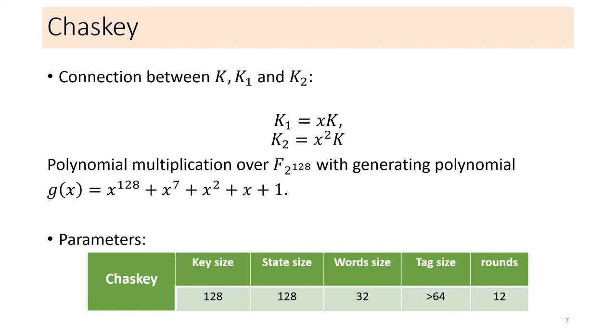The keys K1 and K2 are derived from K by polynomial multiplication with X correspondingly with X square over the finite field F2 to the 128. For K1, this multiplication means that K is shifted with one position to the left if the first bit, which is the leftmost bit, is equal to 0, or shifted and then XOR with a constant if the first bit is 1. For this generating polynomial, the constant is 135 in decimal. If the bit is 0, then K1 can be simply considered as a rotation of K. For K2, the same operation is valid and applied twice.